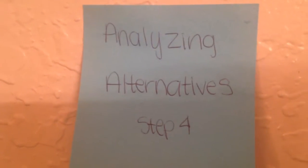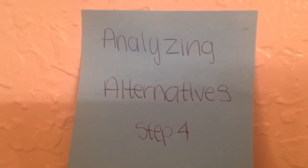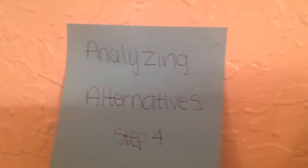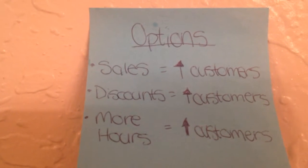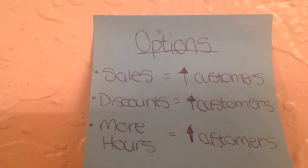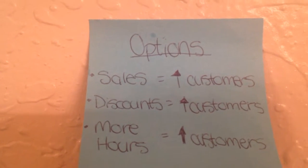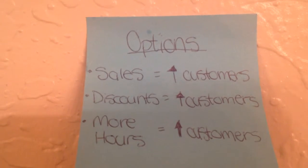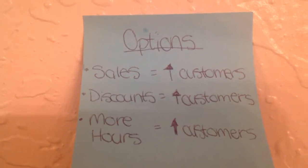Step four: analyzing alternatives. The options are narrowed down to having sales, implementing discounts, or increasing business hours.